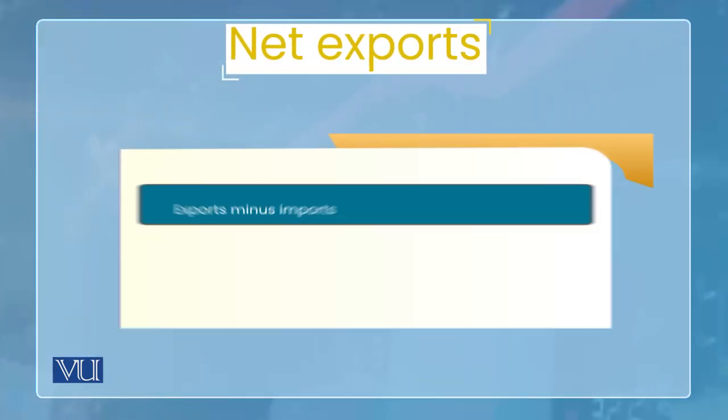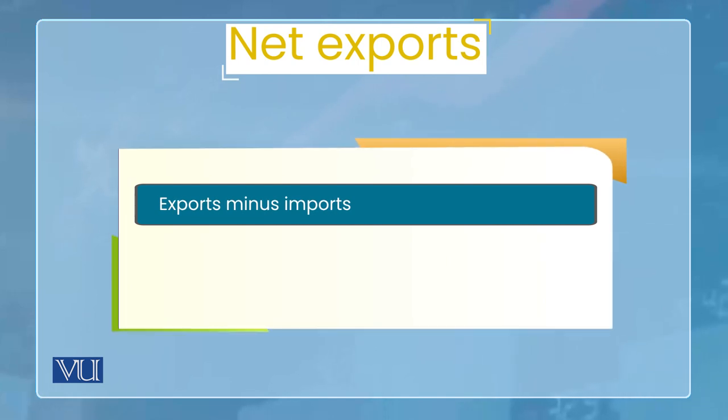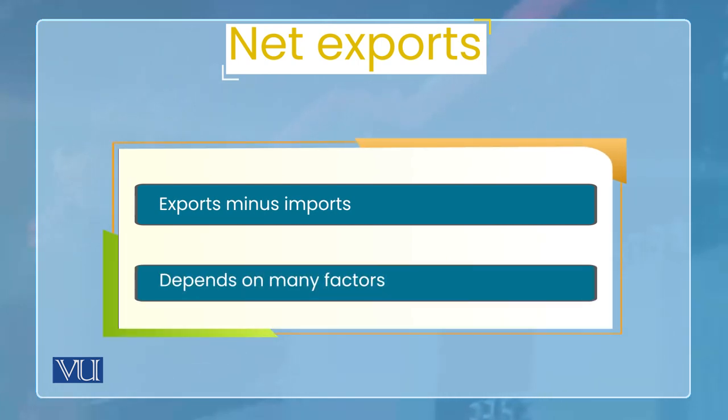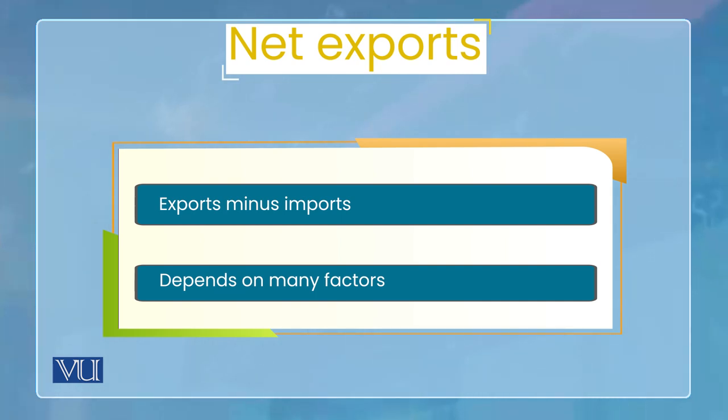اس کے بعد aggregate demand کا last component آ جاتا ہے: net exports۔ Net exports کا مطلب ہے exports minus imports۔ یہ جو net exports ہوتی ہیں، یہ بہت سارے factors پر depend کر سکتی ہیں، لیکن ہمیں اپنے macro economic model کے لیے main determinant دیکھنا ہوتا ہے۔